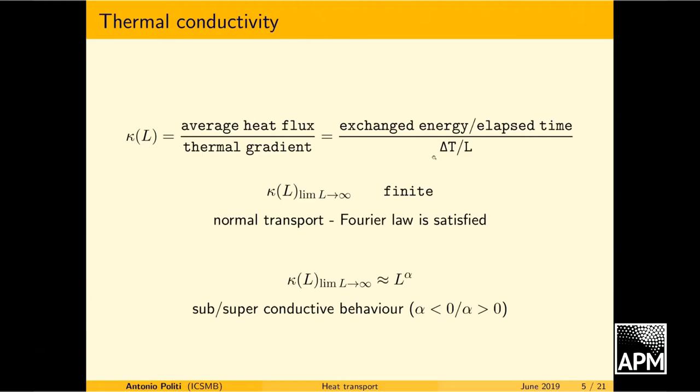So the question is, what does it happen to this ratio when the length of the system is let go to infinity? Finite conductivity, which means the validity of the Fourier law, as it was stated in the beginning of the 19th century. If it stays finite, which means that the numerator decreases as 1 over L, because the denominator by construction is 1 over L. If it stays finite, then you say, ah-ha, Fourier law is satisfied. But if it scales differently, then eventually you may have either a divergence of the conductivity or even might go to zero. What makes the problem interesting is that in many models, it has been discovered that quite often there is a divergence. So there is this exponent alpha, which is a measure of the degree of anomalous behavior. So that's the problem.